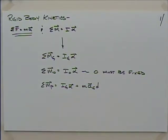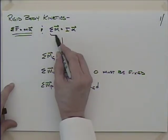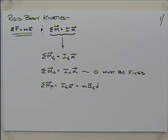We talked the last couple times about finding I. This equation requires more work because when you look at the moment and things rotating, the question of what point it is rotating about becomes fairly important. While alpha or omega might be the same at every point, I is certainly not the same at every point, depending on what axis you're rotating about.